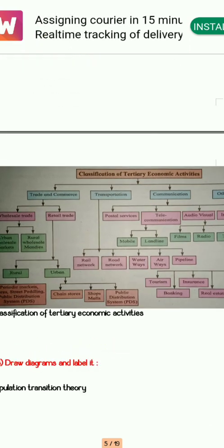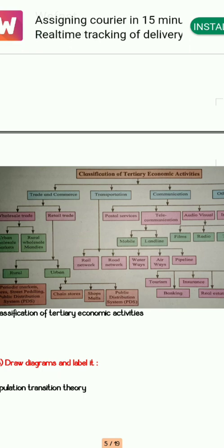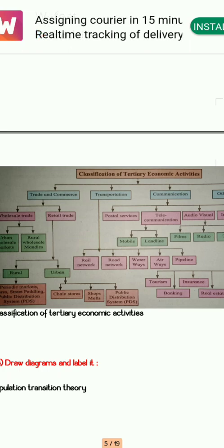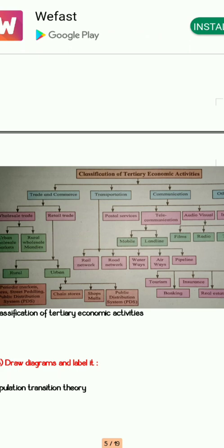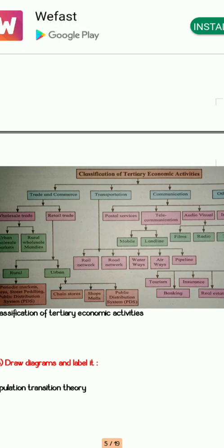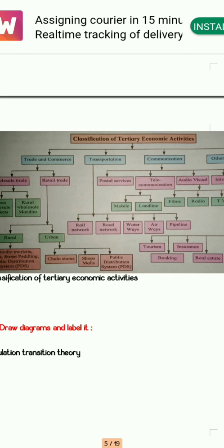After that we have the classification of tertiary economic activity. This diagram is already present in your textbook. At least you need to show trade and commerce, transportation, communication, and other services. Within that, you can include wholesale and retail. If you cover at least seven to nine points well, you will get full two marks for two marks total.